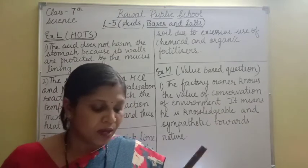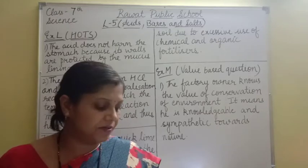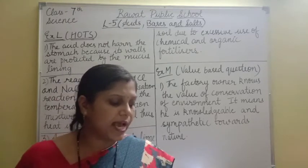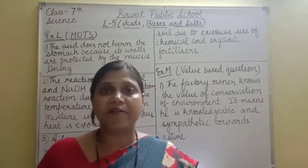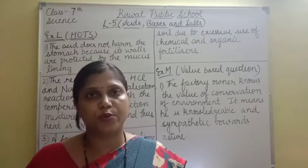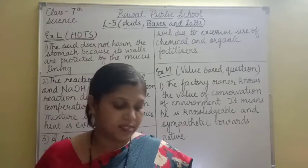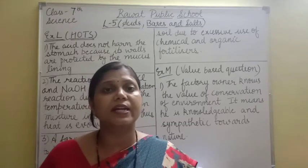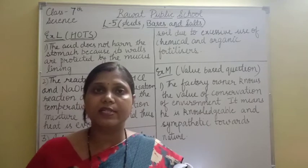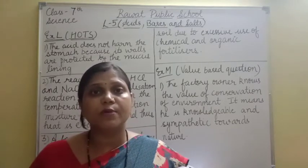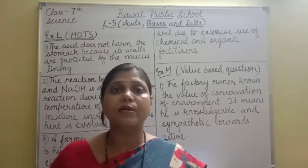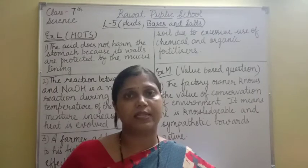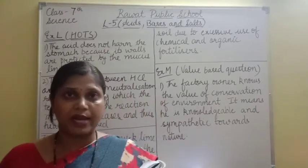Now coming to Exercise M, the value-based question. A factory owner treats factory wastes to neutralize them before allowing the wastes to flow into water bodies. Factory wastes contain lots of acidic substances. When they are discharged into water untreated, it hampers the life of aquatic organisms — the aquatic plants and animals that live in water. So the wastes are neutralized to prevent this harm.